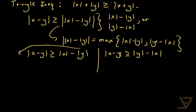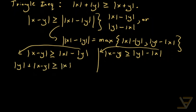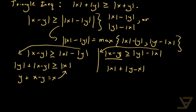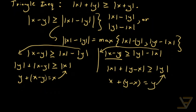Using the triangle inequality: take y to one side and x to the other. We get the absolute value of y plus the absolute value of x minus y is greater than or equal to the absolute value of x — this is true because y plus x minus y equals x. Similarly, the absolute value of x plus the absolute value of y minus x is greater than or equal to the absolute value of y — this is true because x plus y minus x equals y. So that proves the reverse triangle inequality a second time.